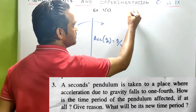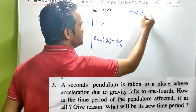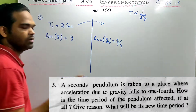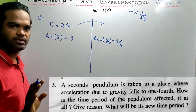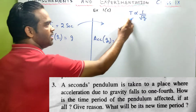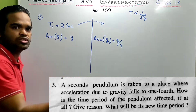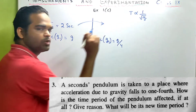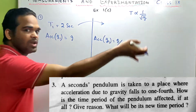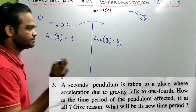Time period is inversely proportional to the square root of acceleration due to gravity, which means they are related. If G changes, T will also change — they are inversely proportional. So if G decreases, time period will increase.